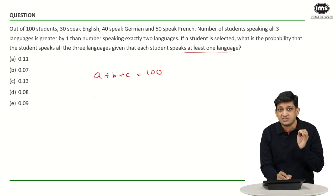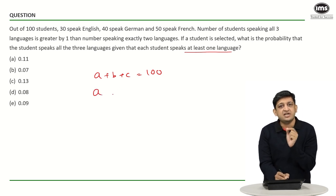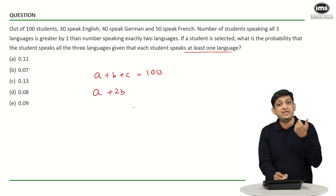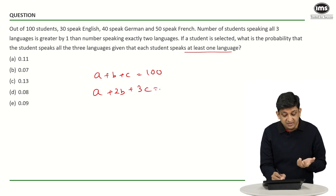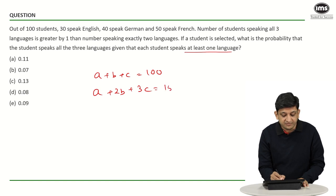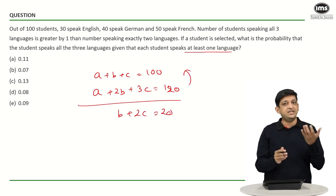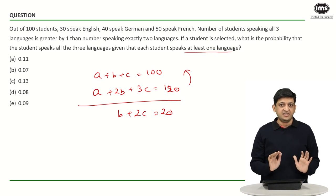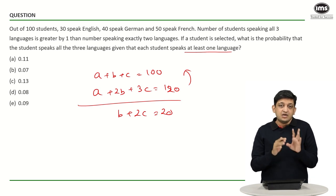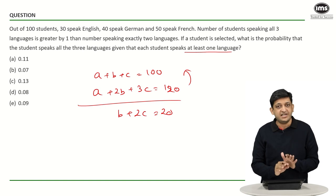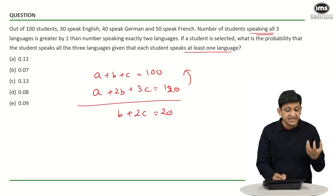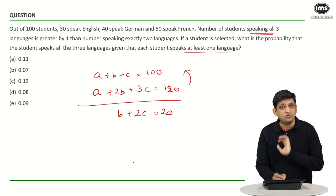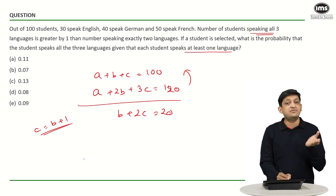Subtracting the first equation from the second gives B + 2C = 20. We also know the number of students speaking all three languages (C) is greater by 1 than the number speaking exactly two languages (B). So C = B + 1. We have two equations and two unknowns.